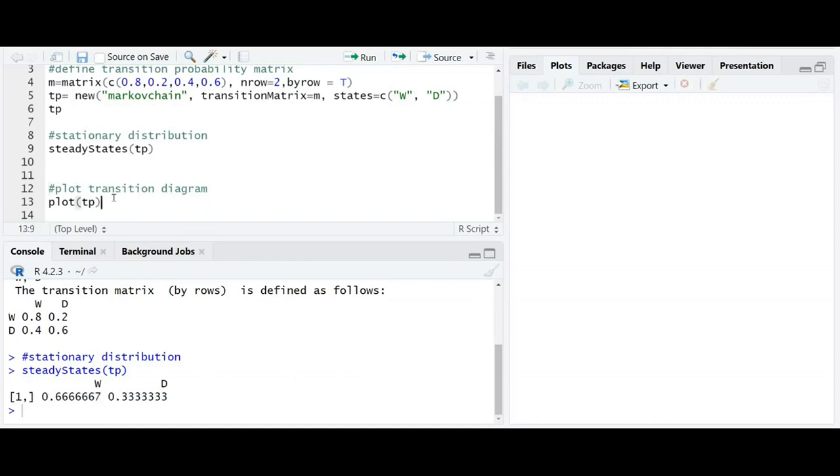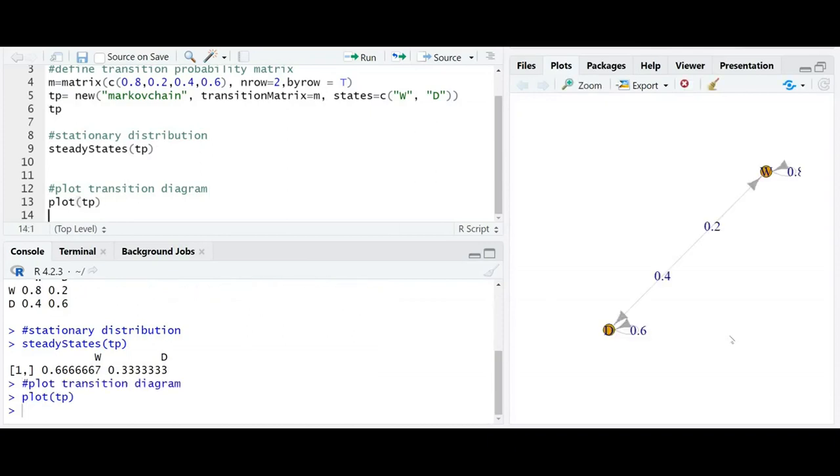Now if we want to plot tp, we can just use the function to plot the transition diagram that was given in the equation. We will write plot tp and then enter.